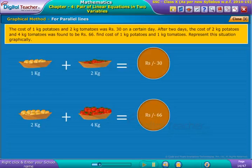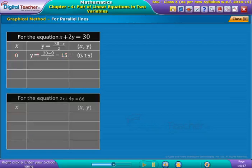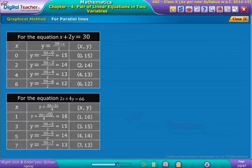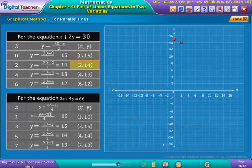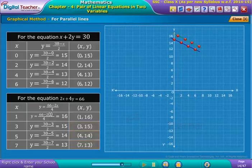Find the cost of 1 kg potatoes and 1 kg tomatoes. Represent this situation graphically with the ordered pairs (X, Y) accordingly. Repeat the same procedure for equation 2 as well. Now, plot the ordered pairs of equation 1 on a graph paper. Join these points to obtain a straight line as shown on the screen. Repeat the same procedure for equation 2 and get another straight line as shown on the screen.